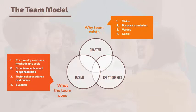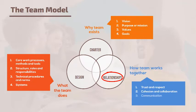The third element of a team is relationships. This is about how your work culture or climate goes, as well as how people work together to accomplish their mission. It includes things like trust, respect, cohesion, collaboration, communication, management of conflict, and so on.